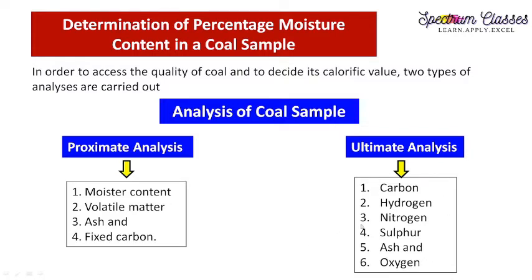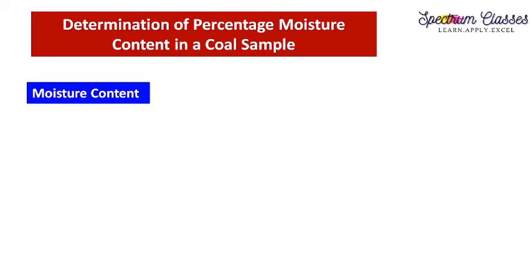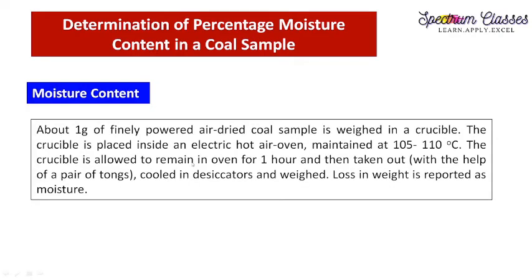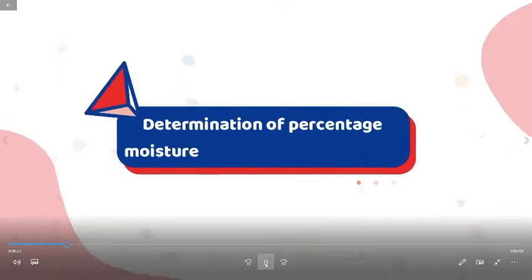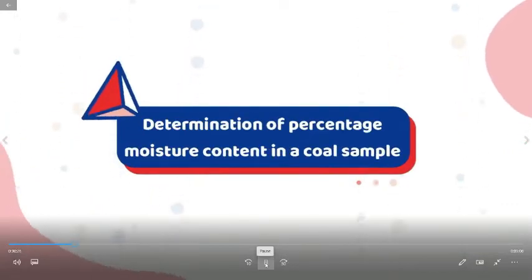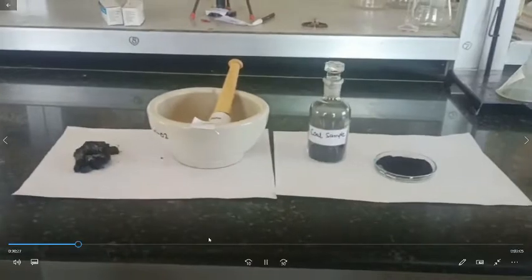In this manner, proximate and ultimate analysis are carried out for the coal sample to determine its quality and calorific value. In their syllabus, proximate analysis is given, in which moisture content, volatile content, and ash content are determined experimentally in three experiments. We are going to discuss the first one: moisture content. Here I have given the procedure for how to determine moisture content, and here I'll show you the lab activity.